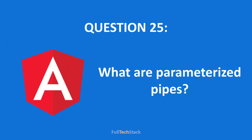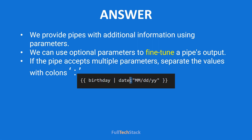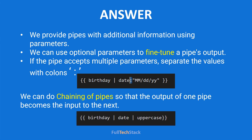Next — what are parameterized pipes? We know that we create pipes for transforming our template expressions. In case we want to pass some additional information to a pipe, we send them via parameters. We can pass multiple parameters using a colon as a separator. So for fine-tuning the output of a pipe we can use parameterized pipes. We can even use multiple pipes on a single expression to fine-tune the output even more — this is also considered chaining of pipes, where the output of one pipe becomes the input of the next.